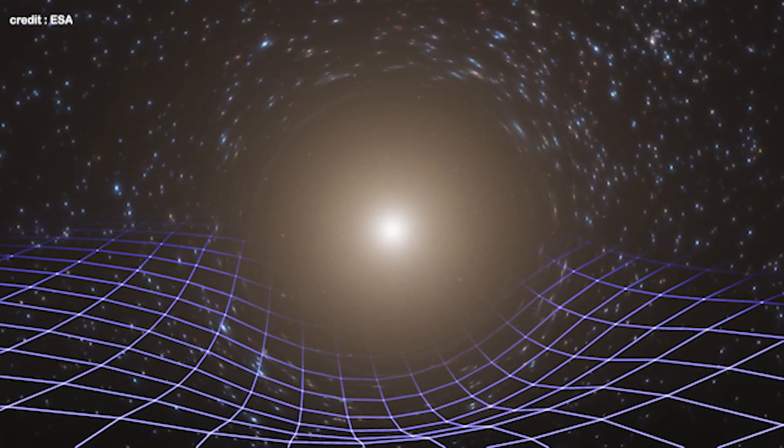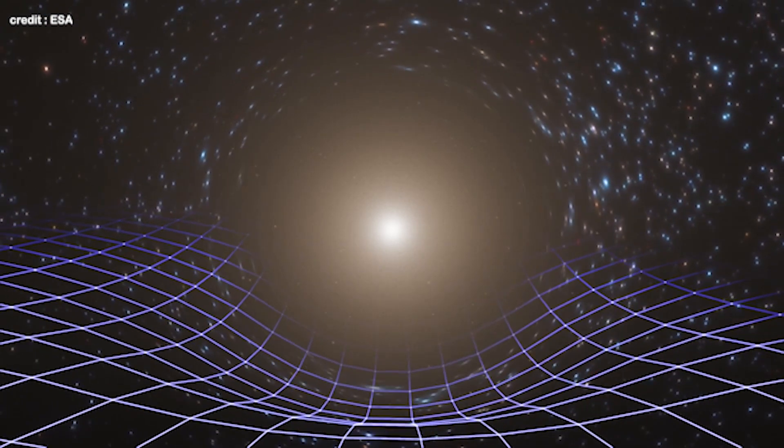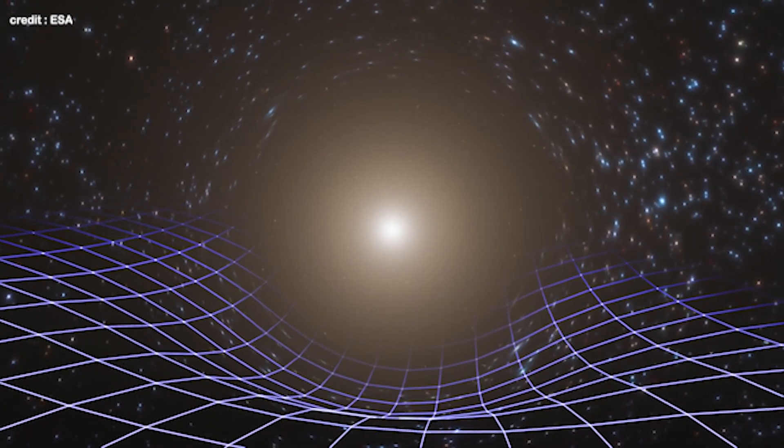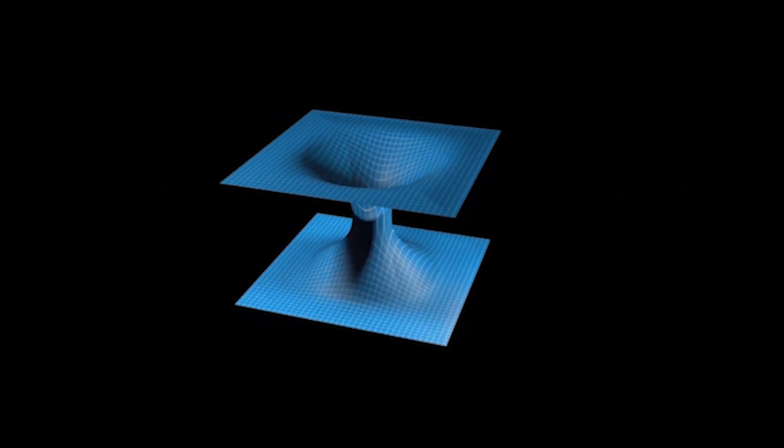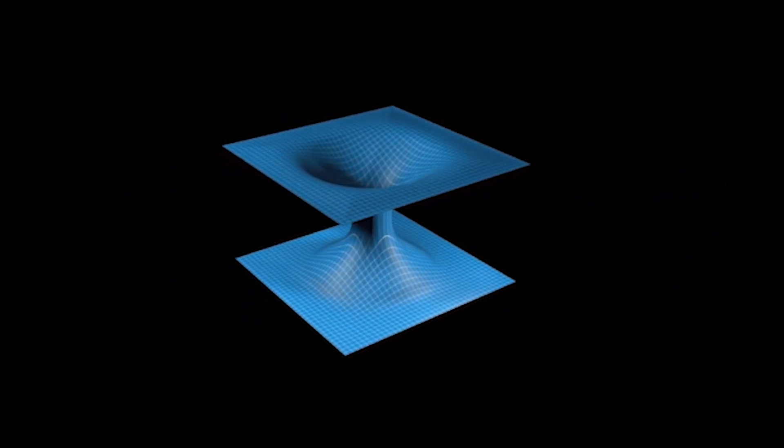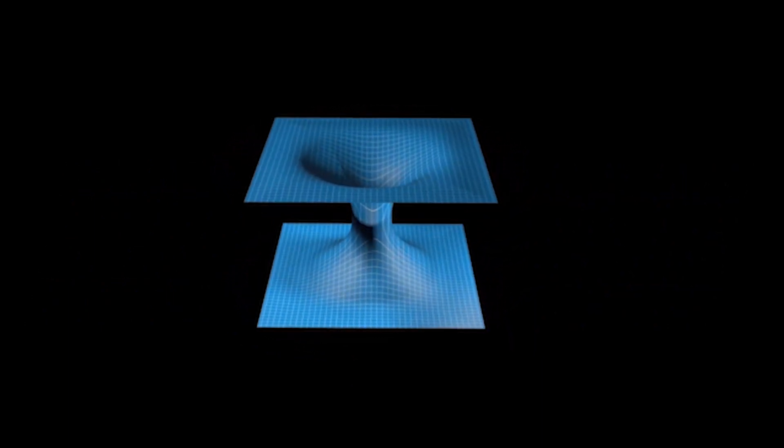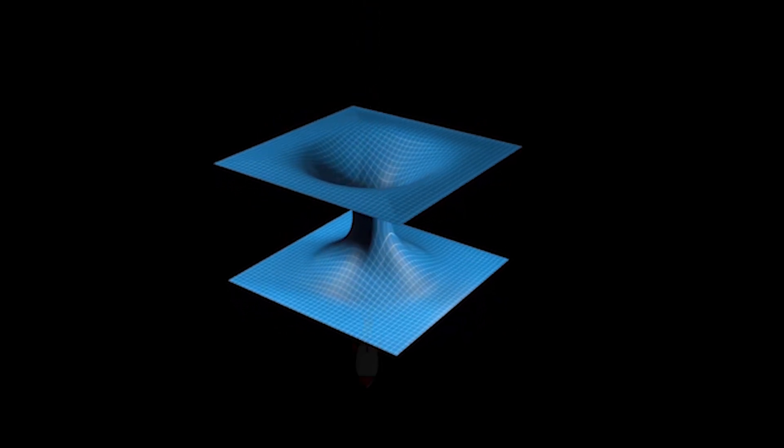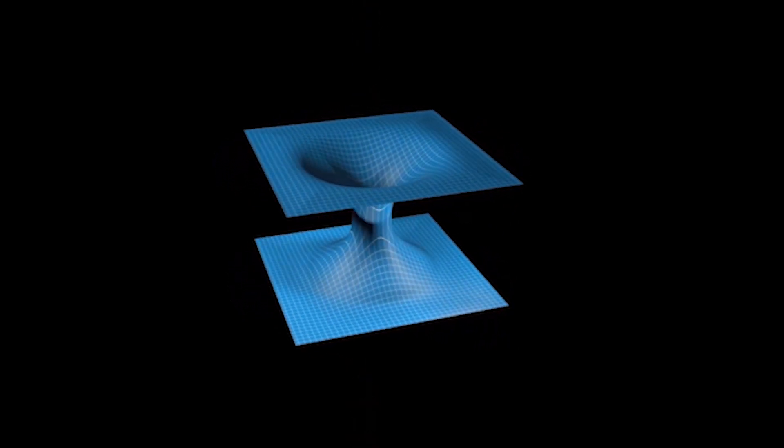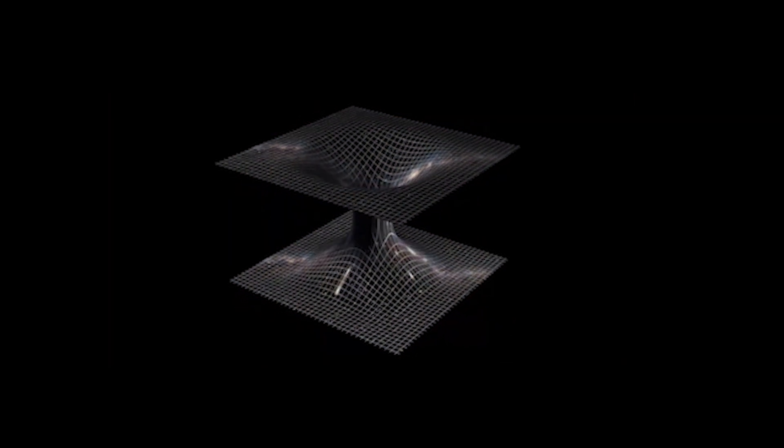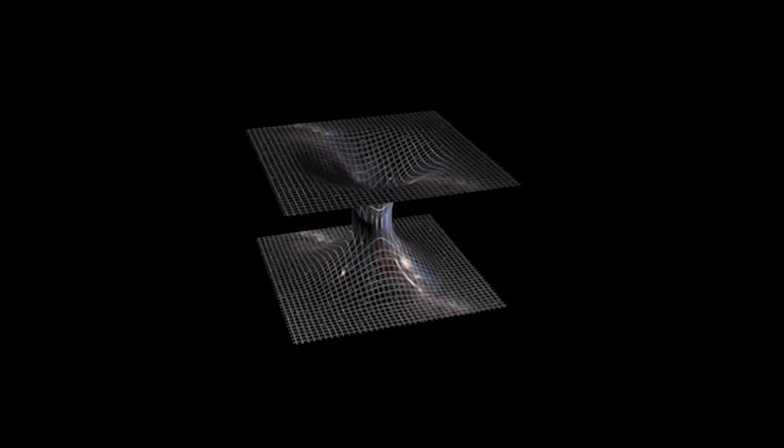The hypothetical and bizarre consequence of general relativity is wormhole. If space can be warped, then it can be bent in such a way that two different points in space-time get connected and something enters into one end and emerges from the other. This not only allows travelling large distances, but also travelling through time.